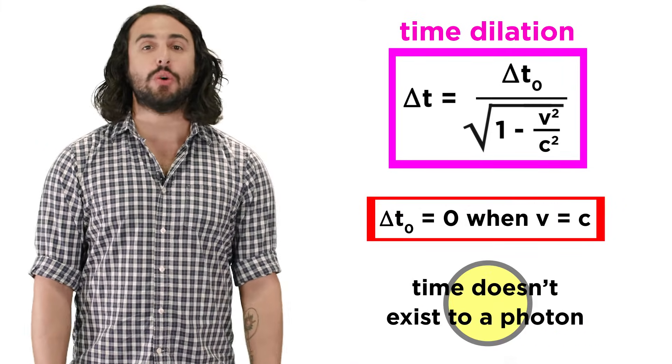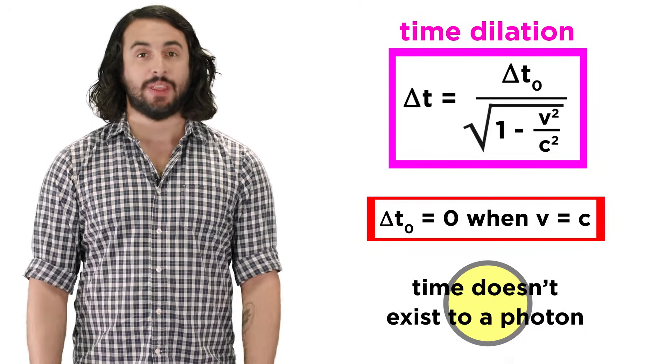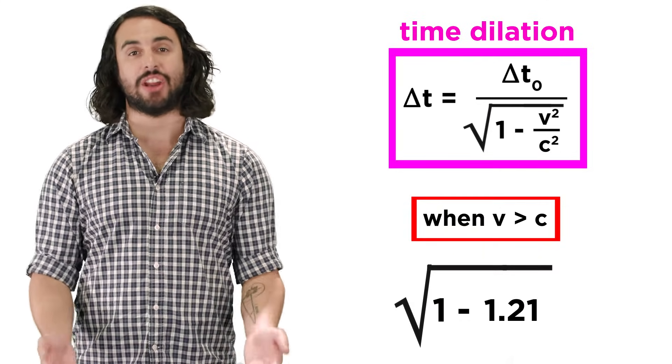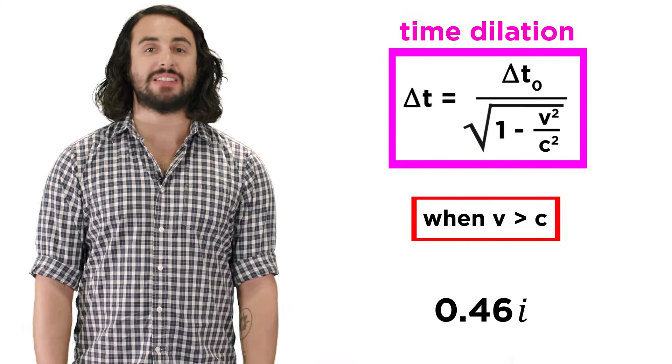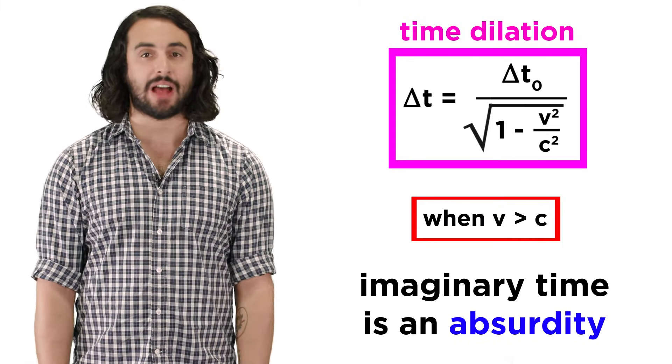So if you could have the perspective of a photon, time wouldn't exist. To move faster than this would mean experiencing imaginary time, because you would then be taking the root of a negative number, and this can have no correlation with physical reality.